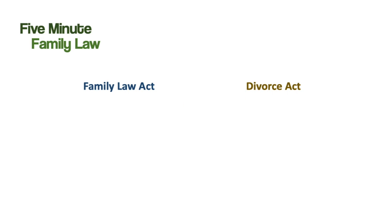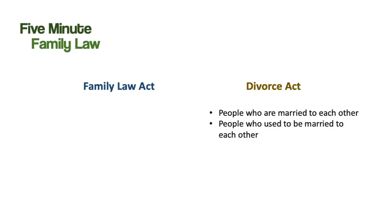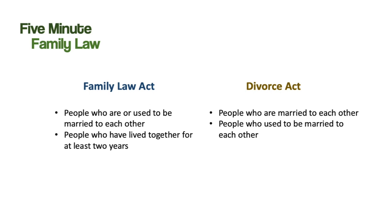Now, these two laws are awesome, but they don't apply to everybody. The Divorce Act only applies to people who are married to each other and people who used to be married to each other. The Family Law Act applies to these people as well, but it also applies to people who have lived together in a marriage-like relationship for at least two years. Under the Family Law Act, these people are unmarried spouses, but they're commonly called common-law spouses.